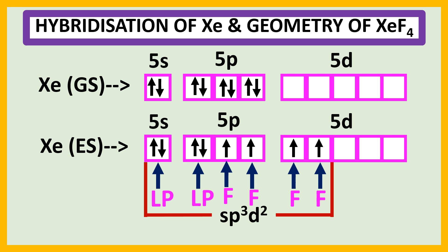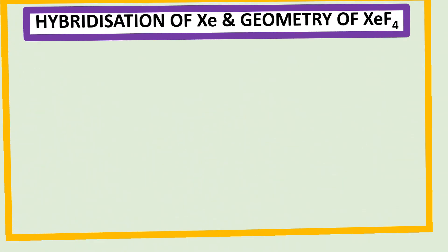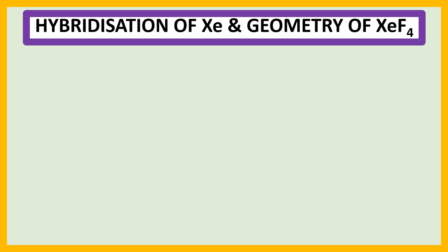Continuing in the next slide, this is the structure of XeF4 molecule where 4 fluorine atoms occupy 4 equatorial positions and 2 lone pairs occupy 2 axial positions.